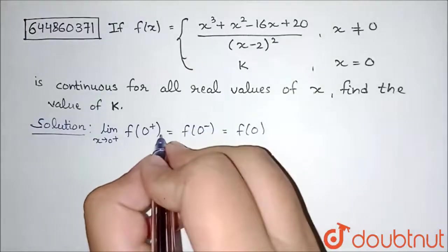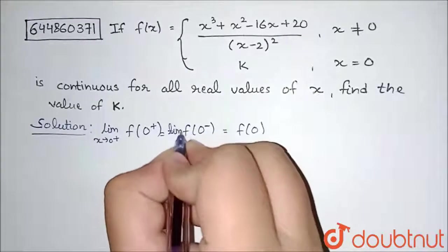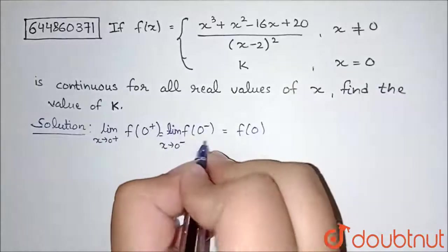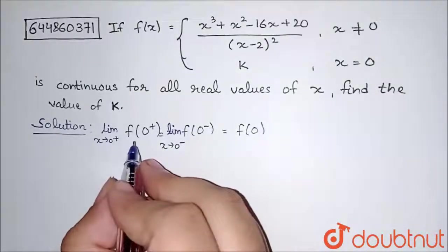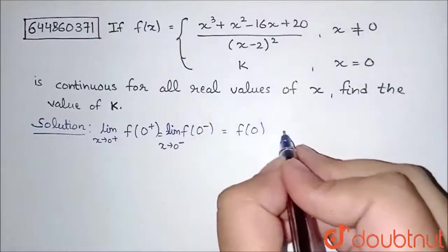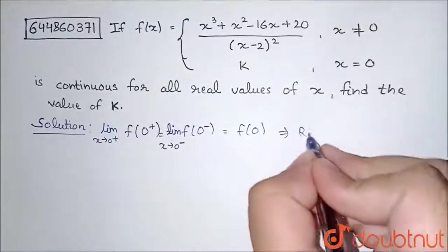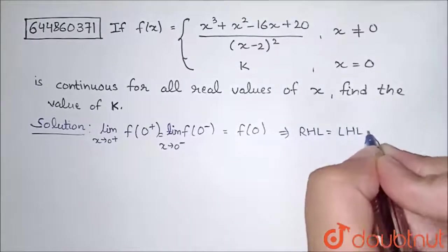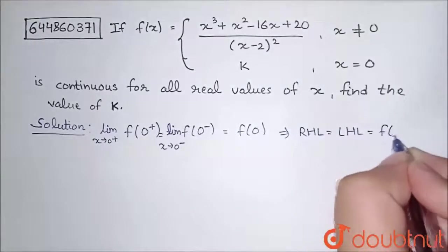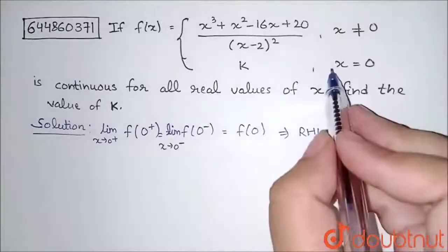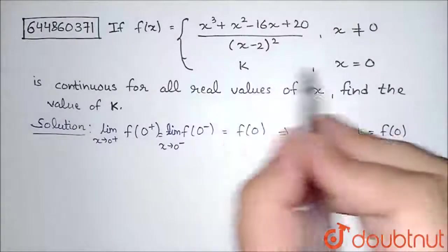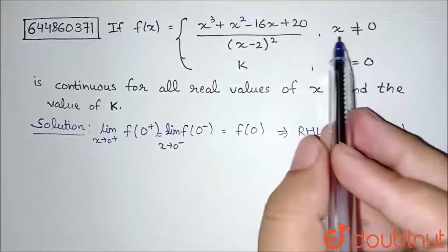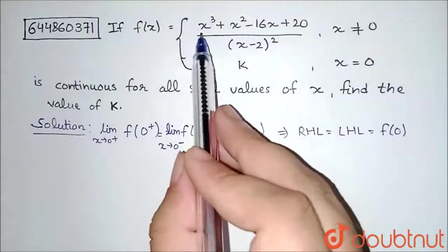Similarly, f(0−) is the limit as x tends to 0 minus. To simplify: the right-hand limit should equal the left-hand limit, and both should equal f(0). Here f(0) equals k, since k is defined for x equal to 0.